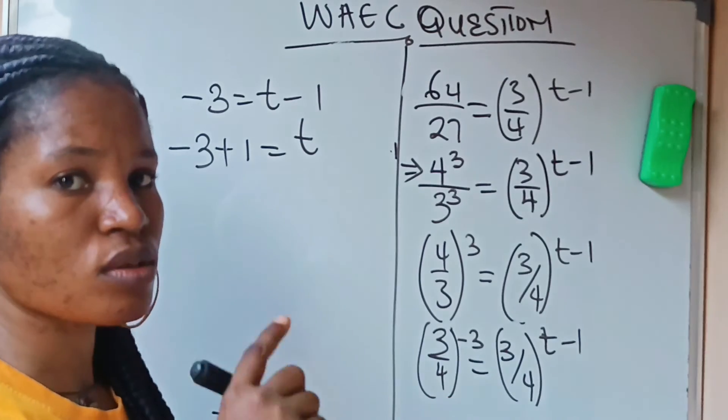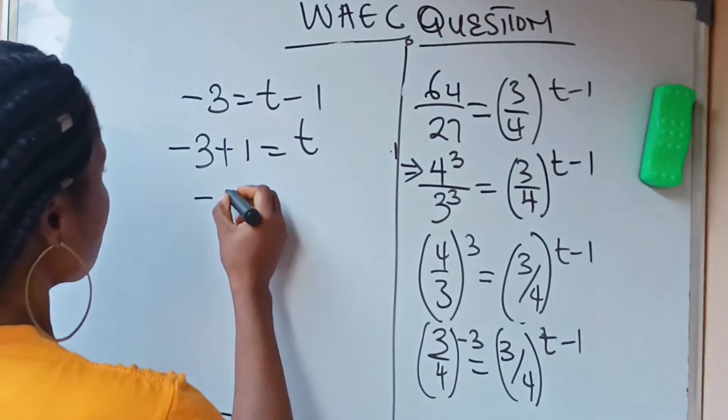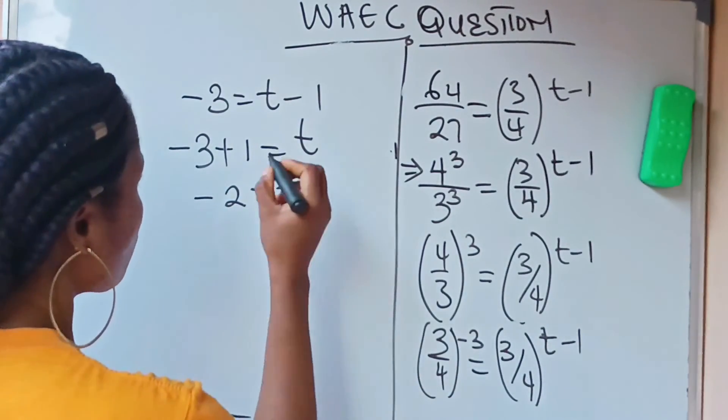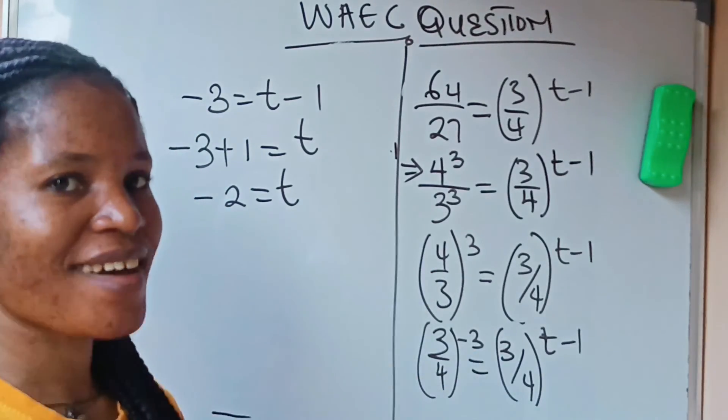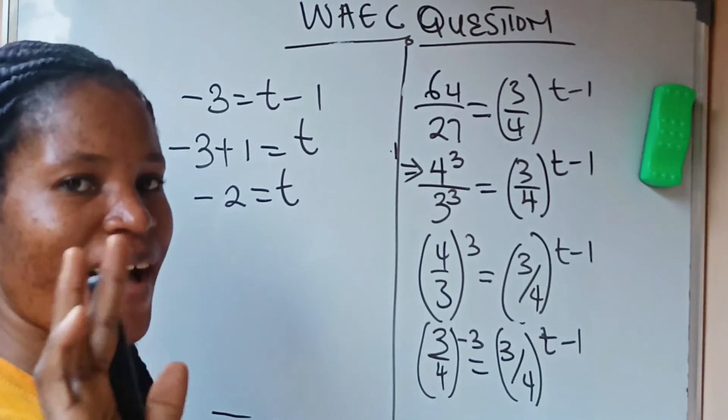Now minus 3 plus 1 is the same as 1 minus 3, which will give you minus 2. So we have that minus 2 is equal to t. That is your final answer. Do have a lovely day and bye.